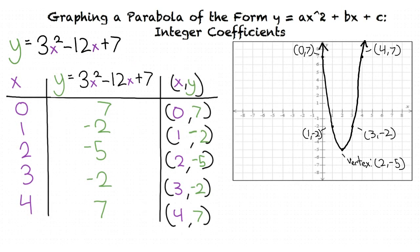We then follow the same steps as before, except we use our original function to find our y values. Once we find our points, we can plot our graph. As we can see, we got the same graph as we did with our first method.